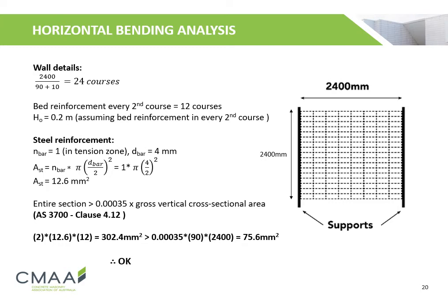As stated, the entire section's bed joint reinforcement area must be more than 0.00035 times the gross vertical cross-sectional area. This wall's section meets this check and therefore is okay to use.